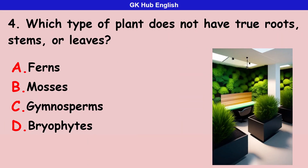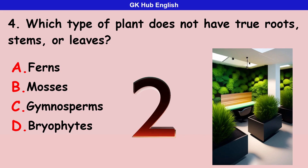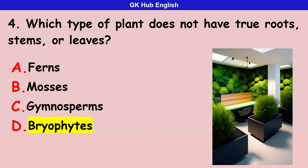Fourth question: which type of plant does not have true roots, stems, or leaves? Option A is ferns. Option B is mosses. Option C is gymnosperms. Option D is bryophytes. Correct answer is bryophytes.